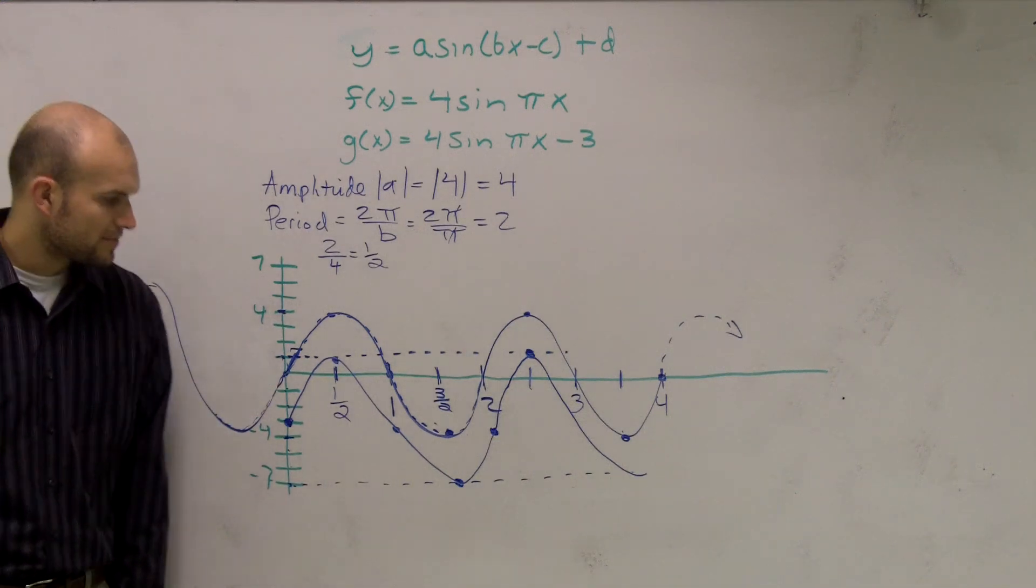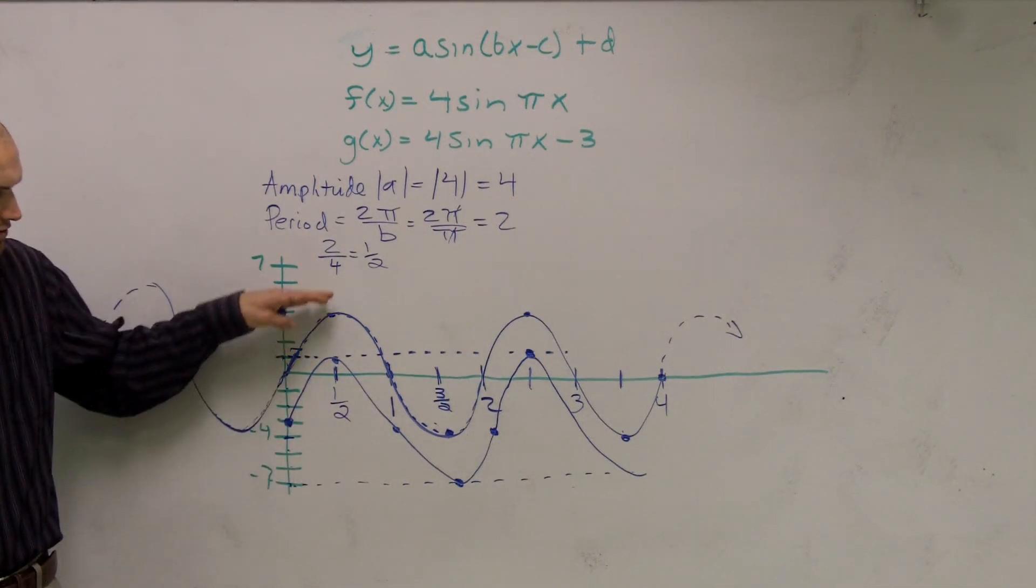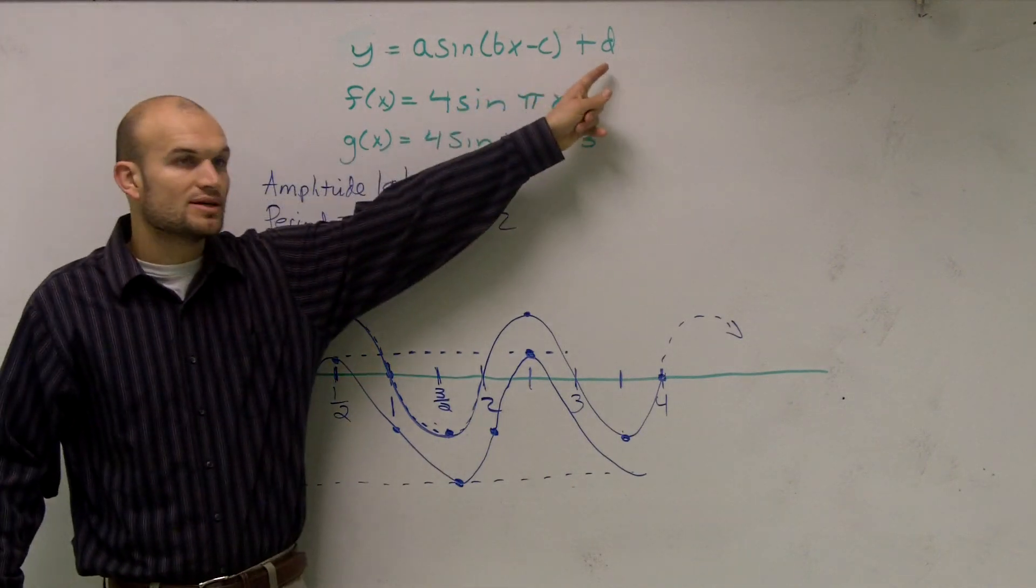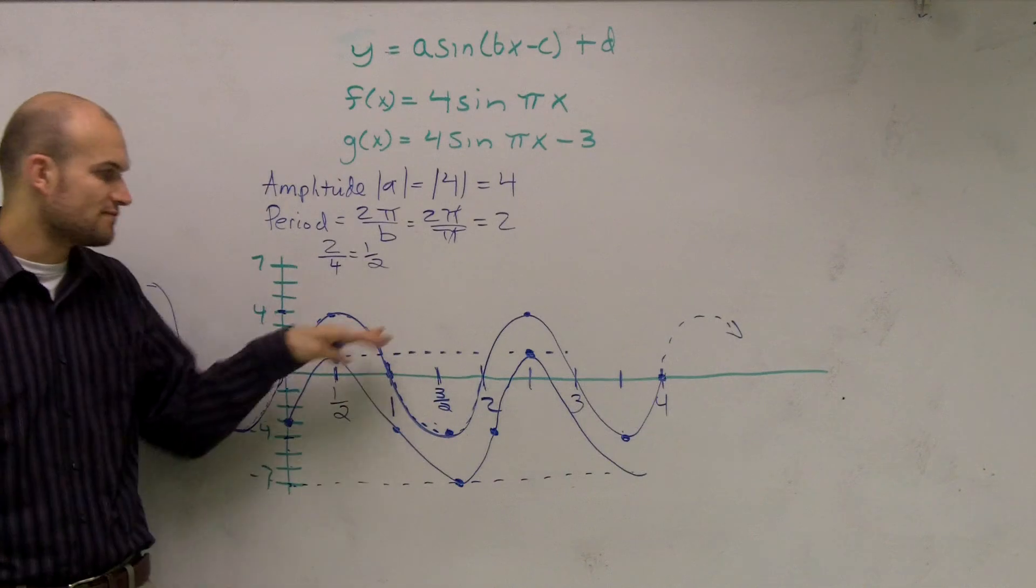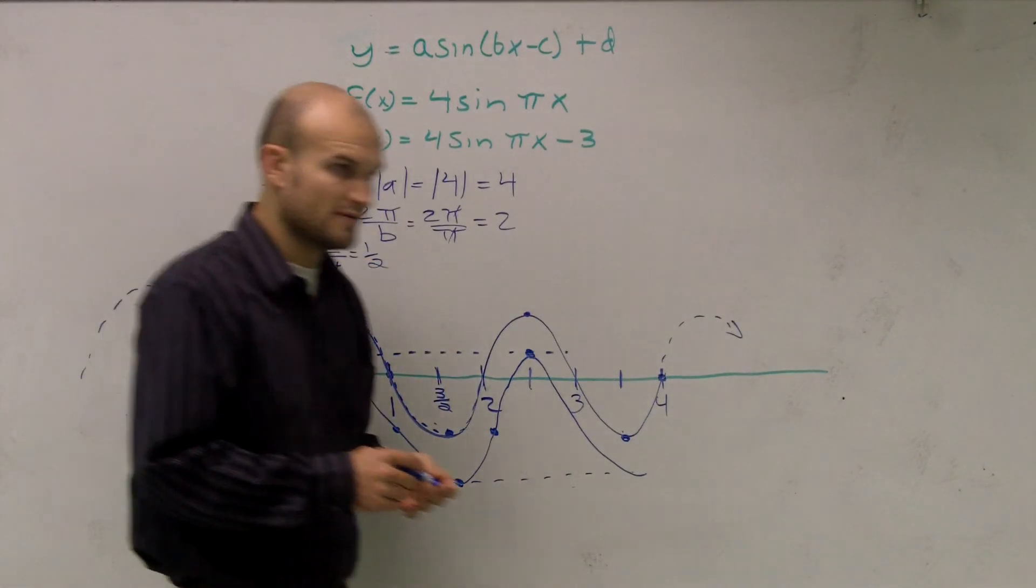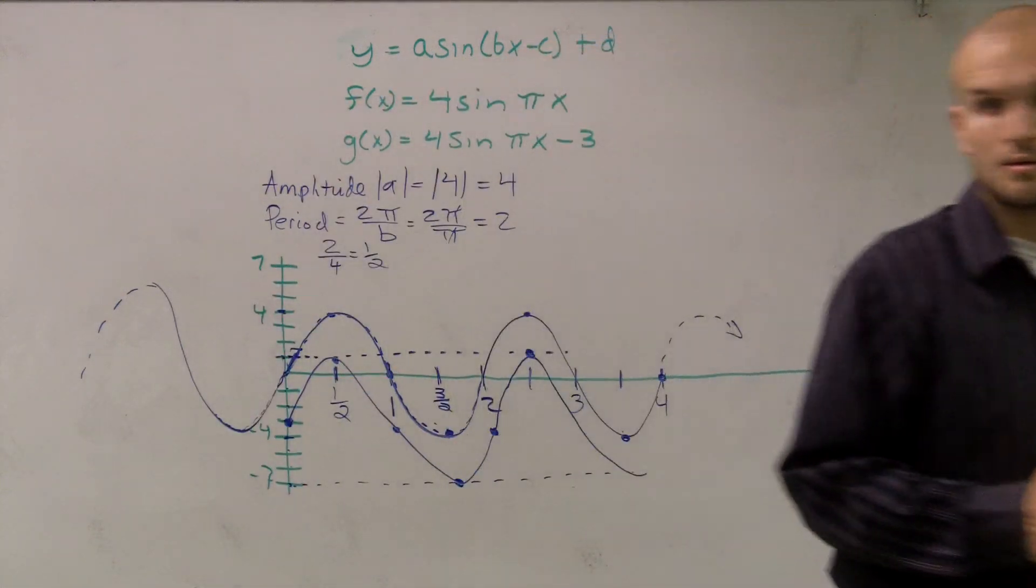So it's going to look something like this. Not the most perfect graph. You can see the exact same thing. All I did is I took this graph and I shifted it down three. That's what the plus d, since it's minus three, I'm going to shift the whole graph down three units. Does everybody see that? All right. Anybody have any questions on that?